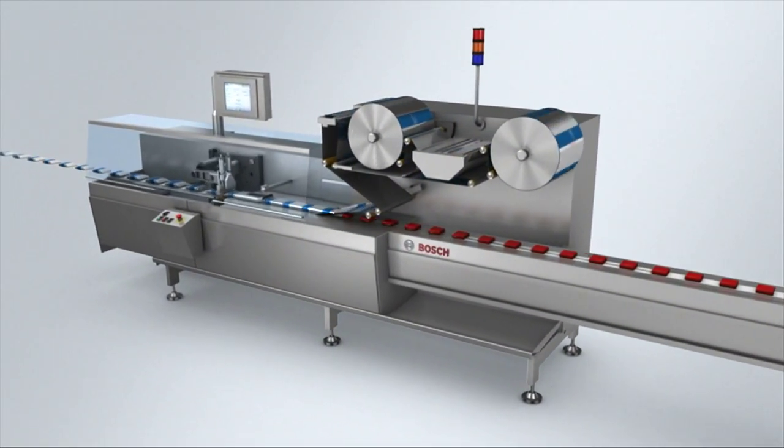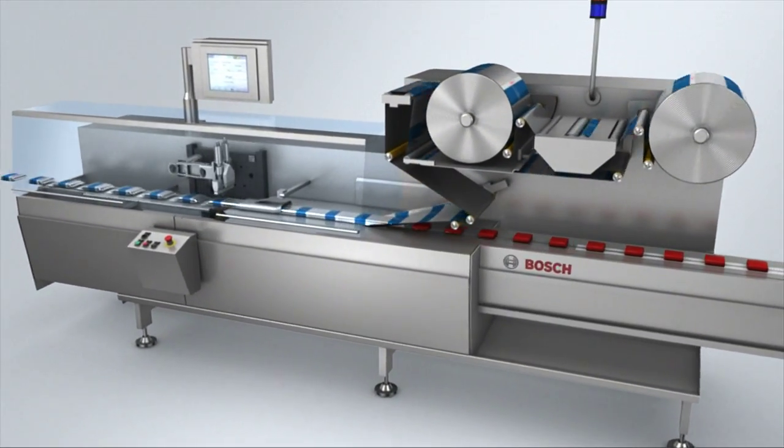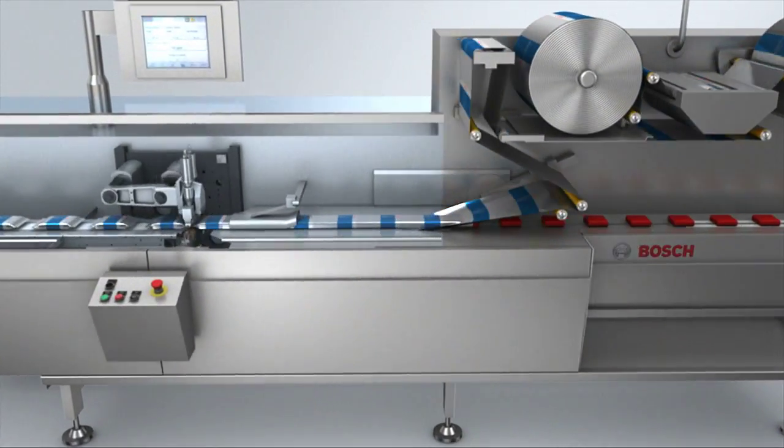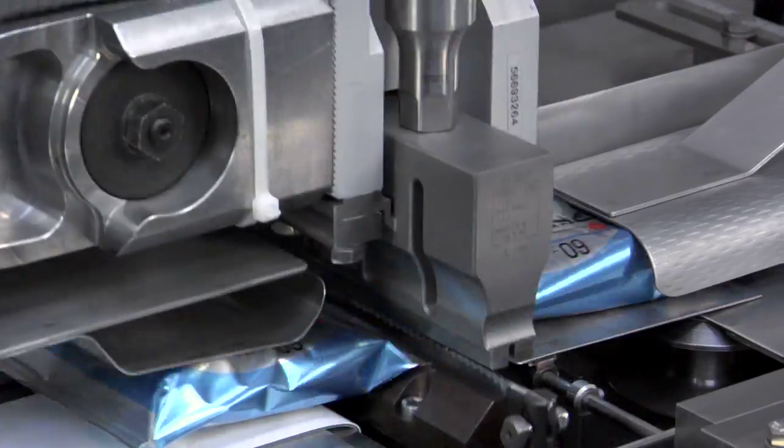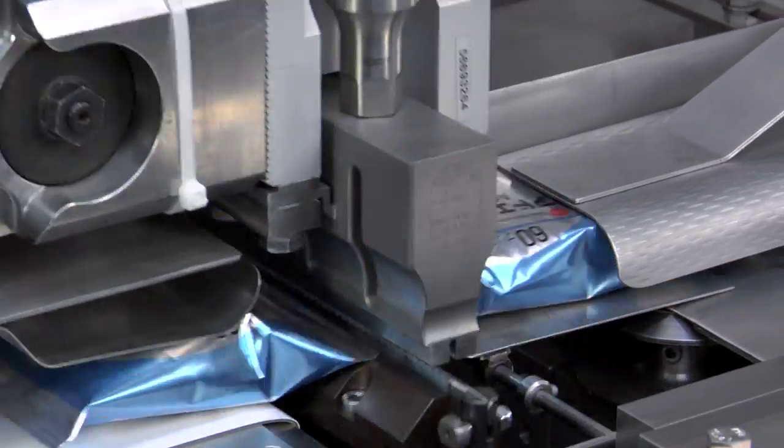The new generation of horizontal flow wrappers for hermetic packaging. Ultrasonic sealing is the key. By using ultrasonic sealing, we achieve savings of material and energy of 30 to 40%.